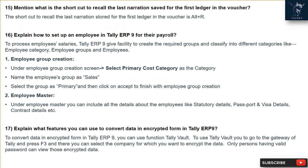Question 16: How do you set up an employee in Tally ERP9 for payroll? To process employee salaries, Tally ERP9 provides the facility to create required groups and classify them into categories like employee category, employee groups, and employees. Under Employee Group Creation, select Primary Cost Category as the category name, set the employees group as Sales, select the group as Primary, and click Accept. Under Employee Master, you can include all details about employees like statutory details, passport and visa details, contract details, etc.